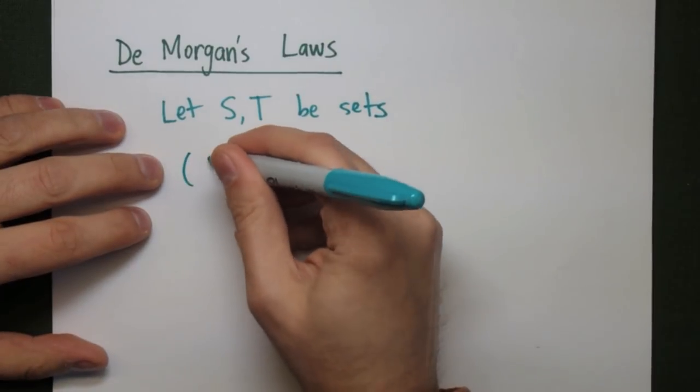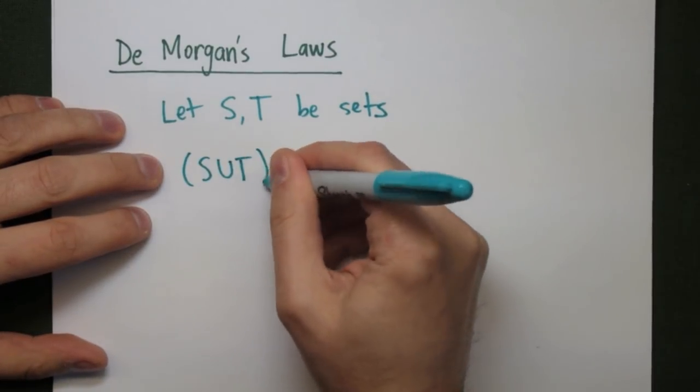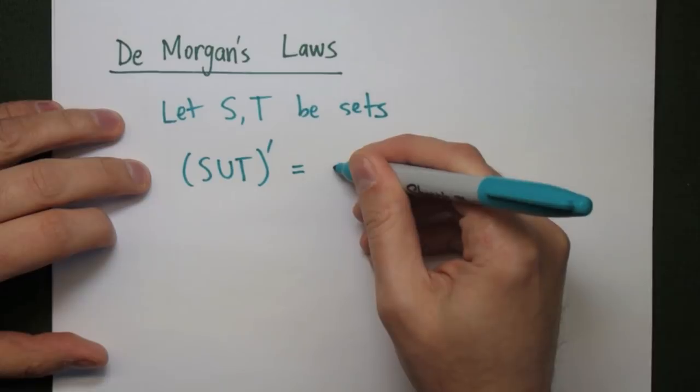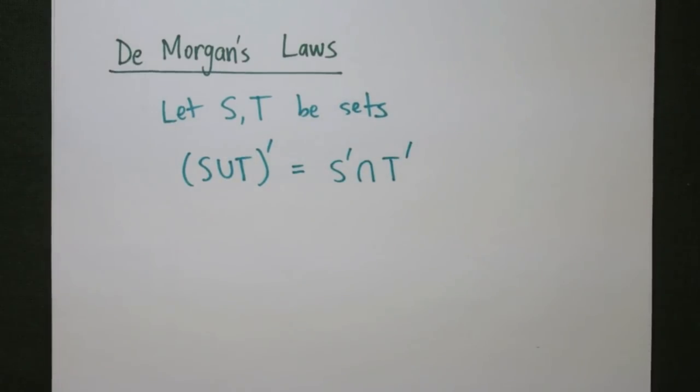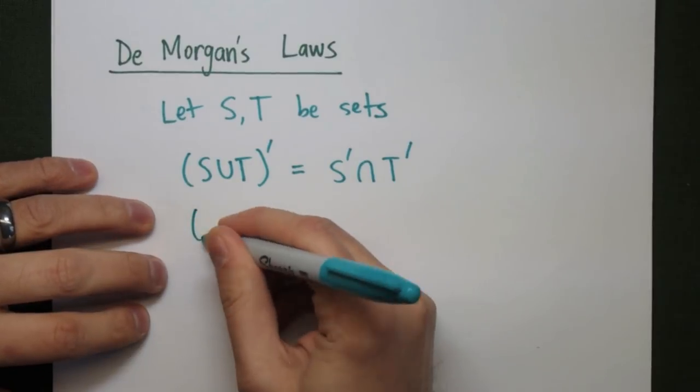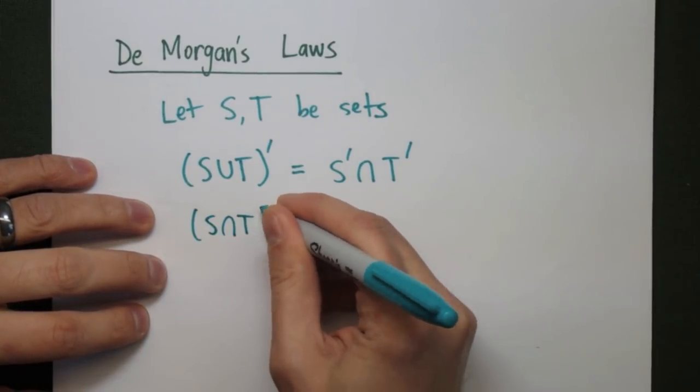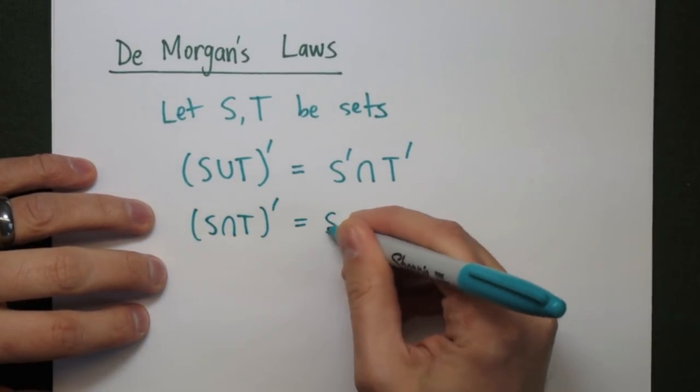So if we start off with sets S and T, then the complement of the union, S union T complement, will be the complement of S intersected with the complement of T. The complement of the intersection will be the union of the complements.